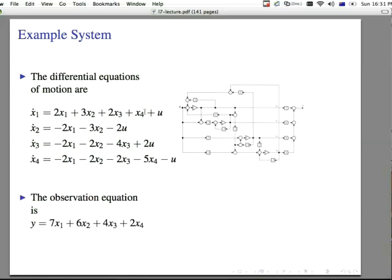The observation equation, as you can see, from what we're actually wanting to get out of the system, Y, is the combination of the state 7X1 plus 6X2 plus 4X3 plus 2X4.